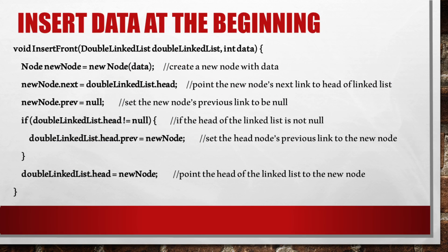Now we write the C# method based on those steps. InsertFront takes two parameters: the doubly linked list and the new data's value as an integer. A new node is created with the data. The new node's next link is set to the head of the linked list, and the new node's previous link is set to null. If the head of the linked list is not null, the head node's previous link is set to the new node. Finally, the head of the linked list is pointed to the new node.